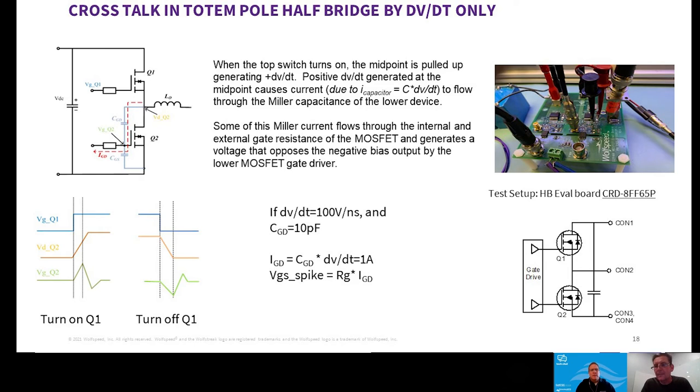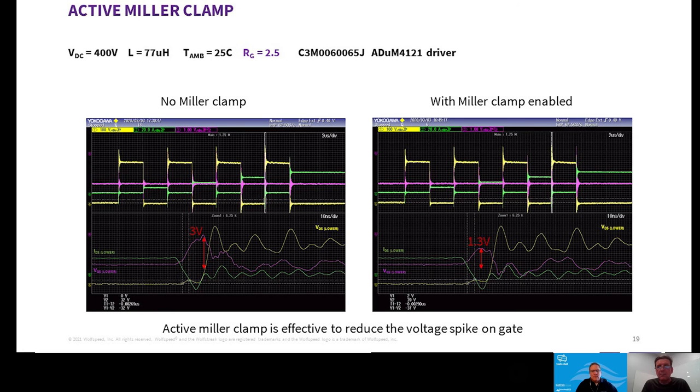Now, is there an effective way to reduce these voltage spikes on the gate? Yes, there are several ways. Common sense ways, to be honest. Nothing rocket science. Good layout. Very good layout. Watch those source inductances. Watch the package source inductance, the trace source inductance. Keep the coupling nice and tight. That's common sense. You would do that with any switching circuit anyway, wouldn't you? But in reality, another way of doing it is really miller clamping. Let's use the gate drive technology.